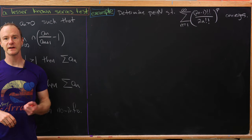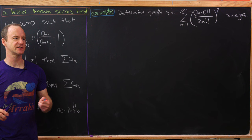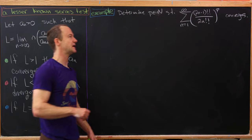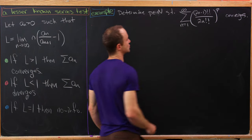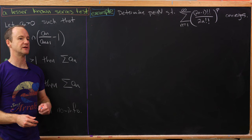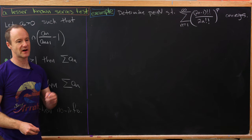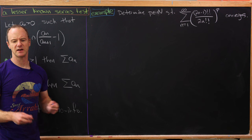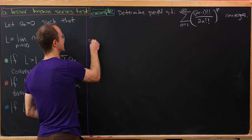Now let's look at an example. We'll determine all natural numbers p such that the sum as n goes from one to infinity of (2n minus one) double factorial over (2n double factorial) to the p-th power converges. Recall that double factorial gives a descending product going two terms at a time: five double factorial is five times three times one, six double factorial is six times four times two, and so on. Let's quickly show that the ratio test is inconclusive here.